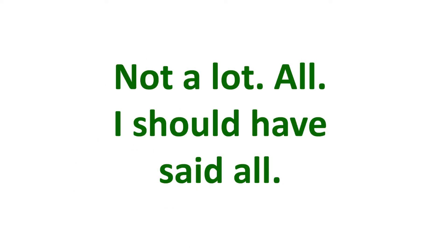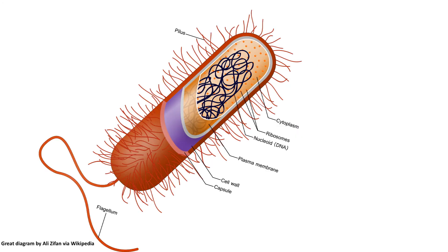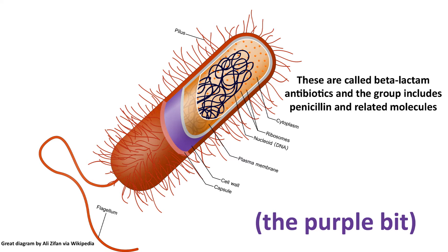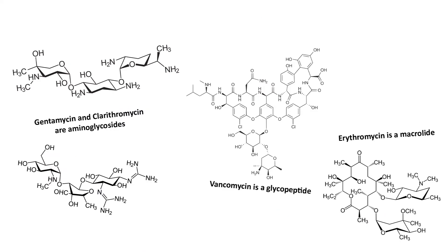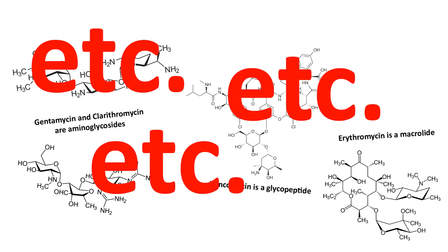So what a lot of antibiotics do is target something you find in bacterial cells, but not in animal cells. For example, bacteria are held together by outer cell walls, and the most common class of antibiotics works by breaking these cell walls down. Animal cells don't have these walls, so they're fine. There are other ways for antibiotics to work, but the goal is always the same, to kill bacteria without killing us.